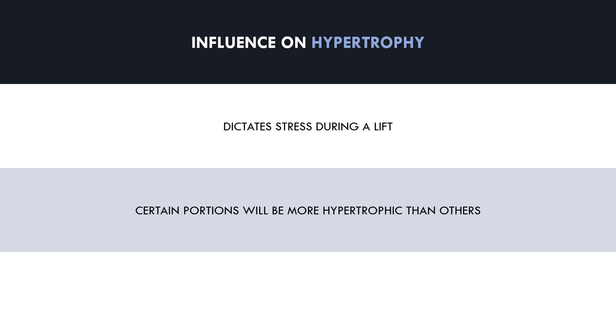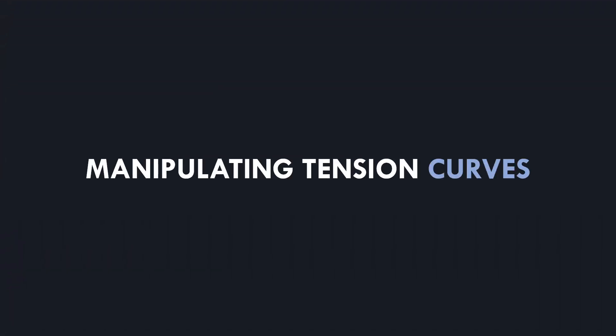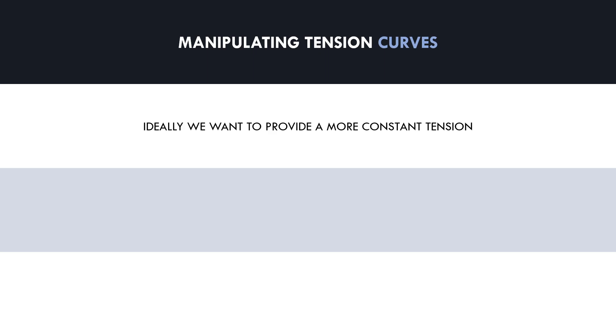Most exercises don't have a severe enough tension curve that makes the lift drastically harder and easier at different ranges, although some exercises certainly do. For these exercises we can manipulate tension curves with different exercise variations to maximize the hypertrophic stimulus. Ideally we want to provide constant tension to the target muscle throughout the entire range of motion. This will stress the muscle equally from the start to the end requiring the muscle to produce force at all different lengths and angles. This is probably going to provide an overall more hypertrophic stimulus per set because more total work must be performed by the muscle fibers.